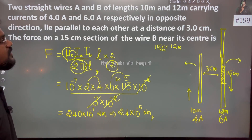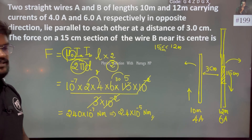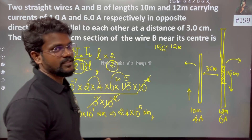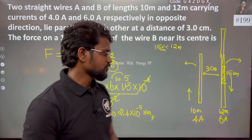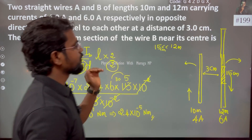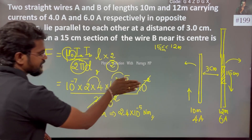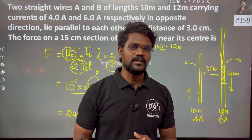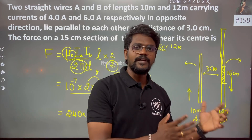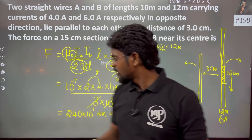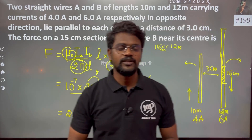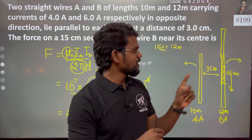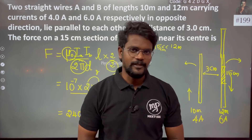So the force on conductor B due to A — denoted FBA — is 2.4 × 10⁻⁵ N, with the length being 15 × 10⁻² m. Since the currents are in opposite directions, this is a repulsion force.